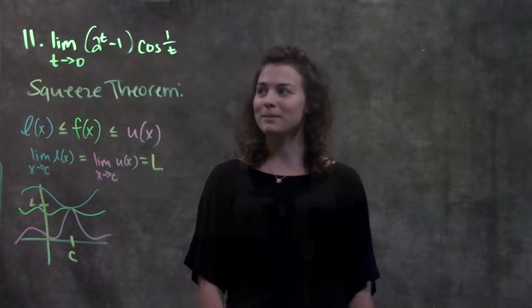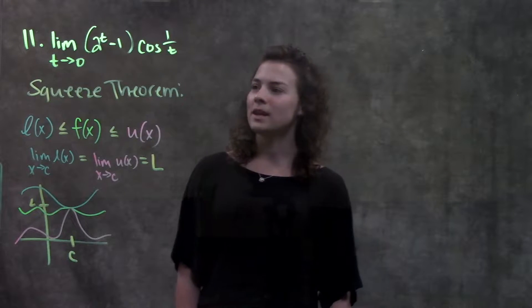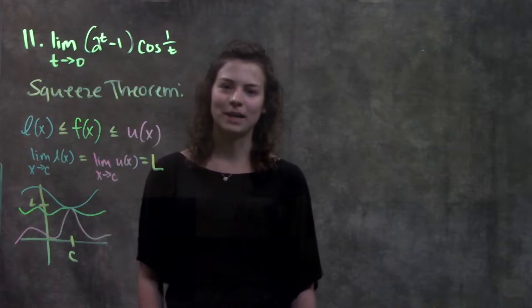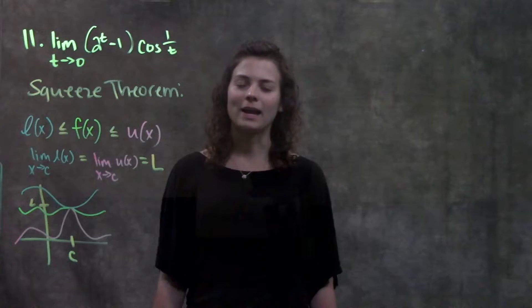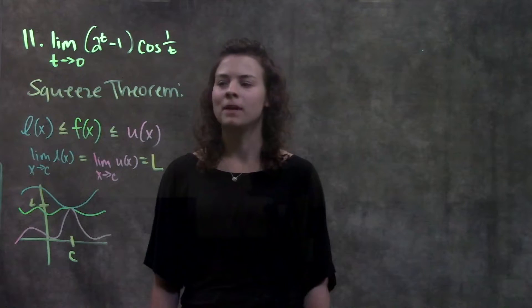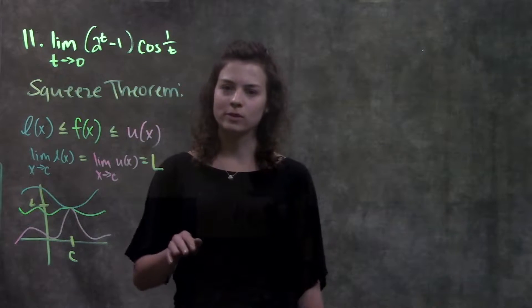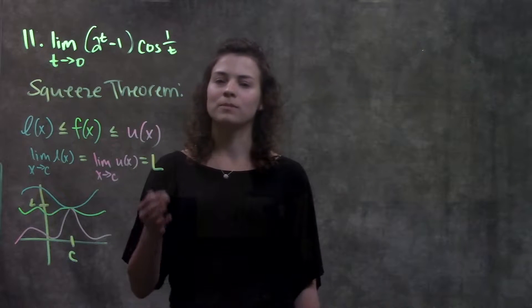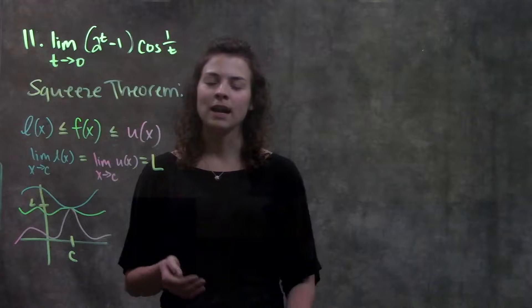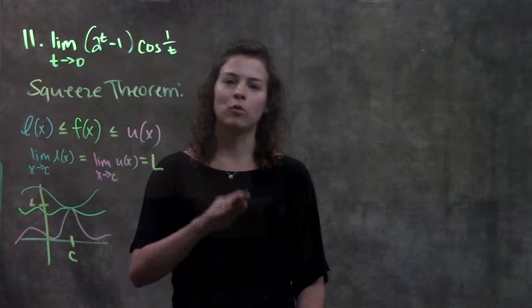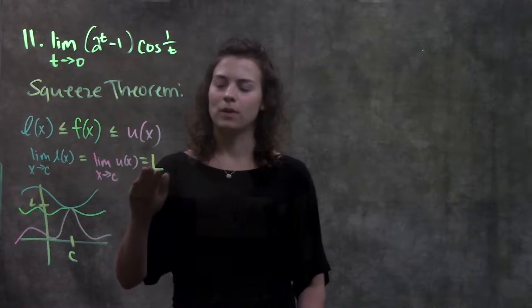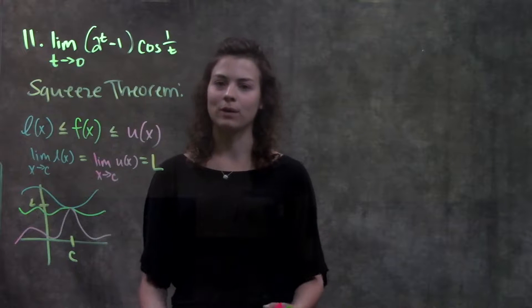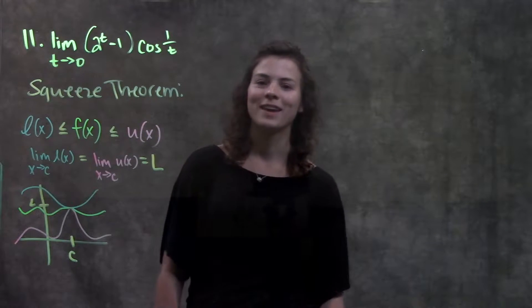This is number 11 in your book. It's a limit as t approaches zero of this function here. Before we start solving this problem, let's go through what squeeze theorem says and the book definition, and then as we solve through this problem, we'll mirror it with the definition so everything will come together and make more sense.